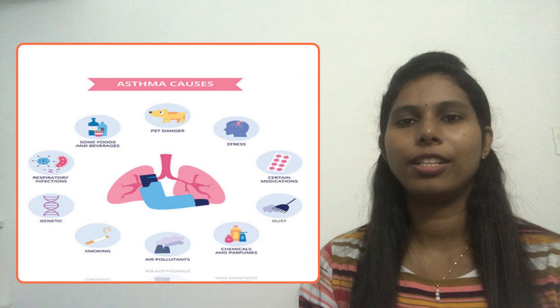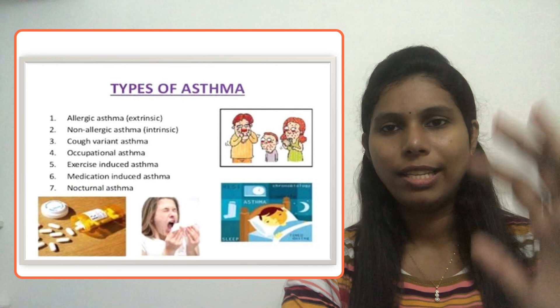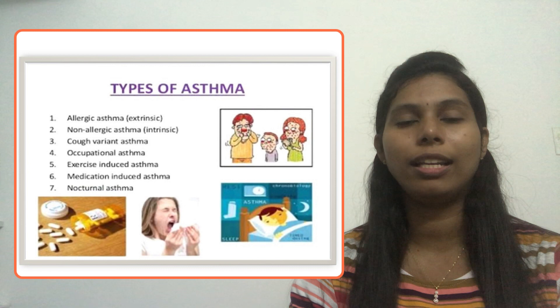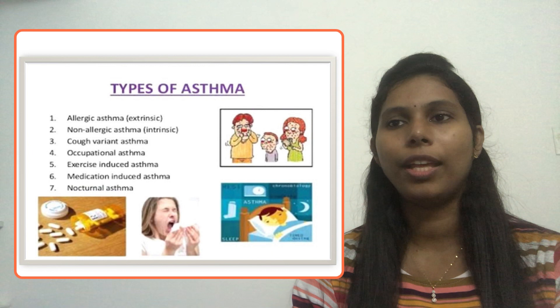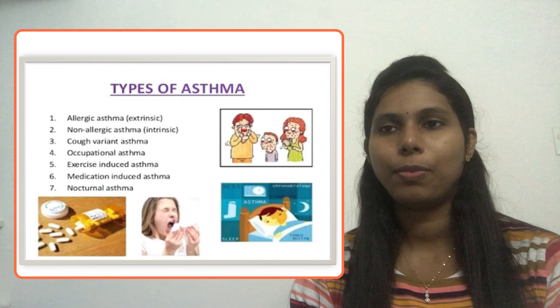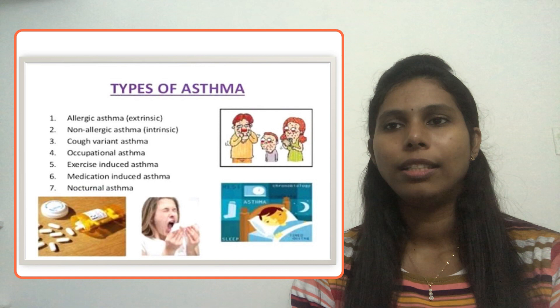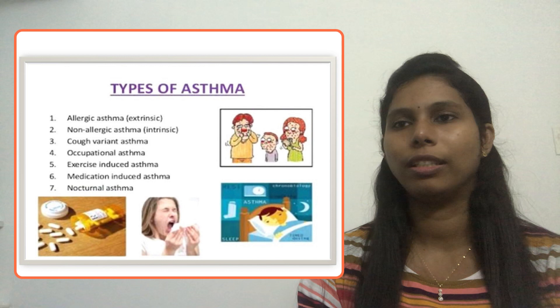Now let's look at the types of asthma. The first is allergic asthma — when someone has an allergy to dust, pollens, or similar things. Then non-allergic asthma, which is intrinsic. Then cough-variant asthma, occupational asthma related to occupational hazards or exposure to asbestos and chemicals, exercise-induced asthma, medication-induced asthma, and nocturnal asthma. Keep in mind the types and how many there are.